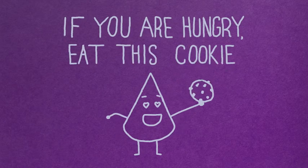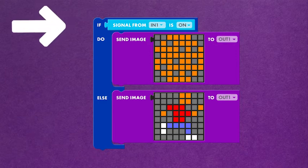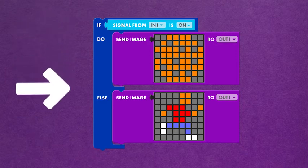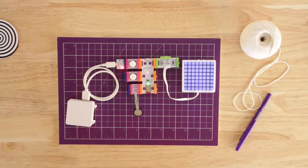Like: if you are hungry, eat this cookie or go for a walk. In code you would say something such as: if you press this button, show a cookie, else go for a walk. You can use logic blocks to create rules